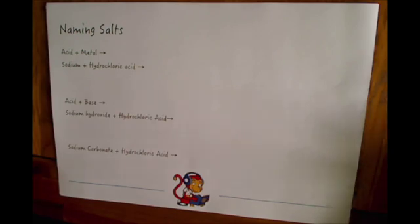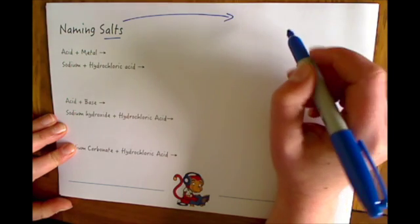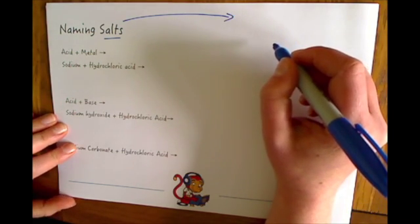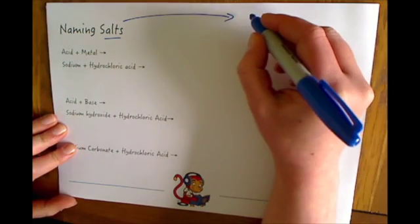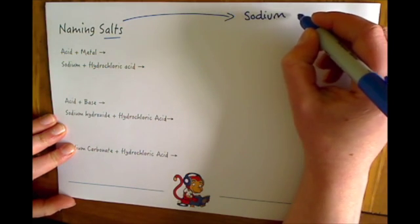First of all let's talk about salt itself. Now the salt that we all think about that we put on our fish and chips and that we use in our day-to-day life is called sodium chloride. That's its chemical name.